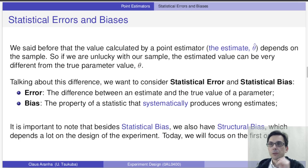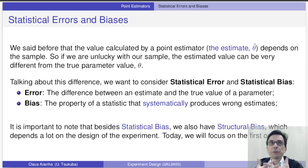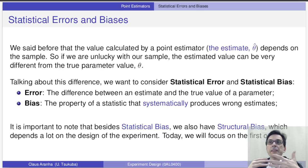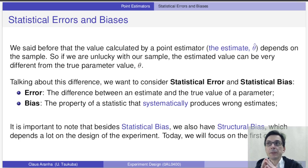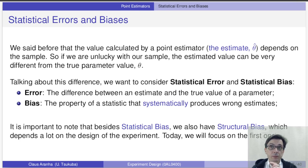The value calculated by the point indicator is a random variable, and it depends on the sample. This means that if we are really unlucky, the estimate that we calculated can be very different from the true parameter.